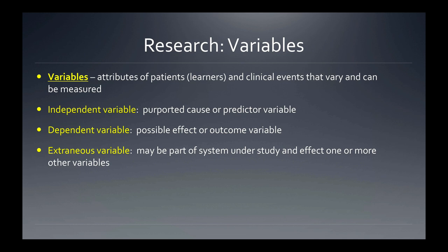We look at variables just as we would in a clinical trial. The independent variable, or predictor variable, is one we think has an impact or influence on a specific outcome. This brings us to the dependent variable, or outcome variable. In educational research, these are educational outcomes — test scores, proportion of students passing a certified examination, or actual performance such as chest compressions meeting American Heart Association high-quality CPR standards.